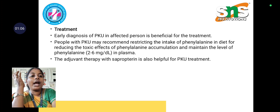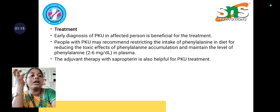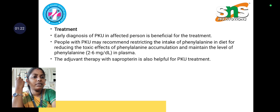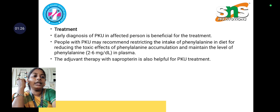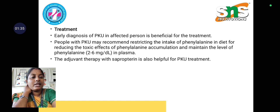For treatment, early diagnosis of phenylketonuria in an affected person is beneficial. It is recommended to restrict the intake of phenylalanine in the diet, as it has already accumulated in tissues. Excess phenylalanine intake leads to toxic effects of phenylalanine accumulation. The plasma level of phenylalanine should be maintained at 2 to 6 mg per deciliter. Adjuvant therapy with sapropterin is also helpful for PKU treatment.